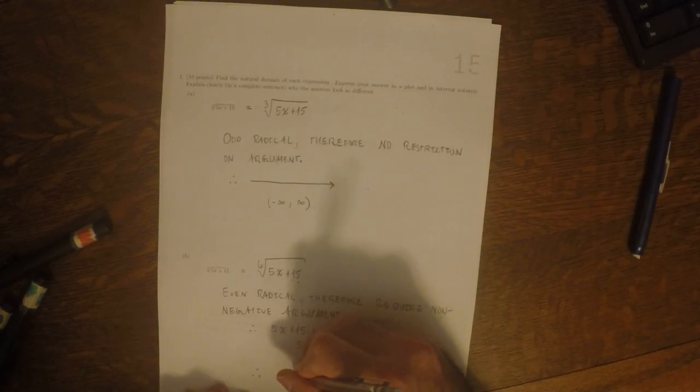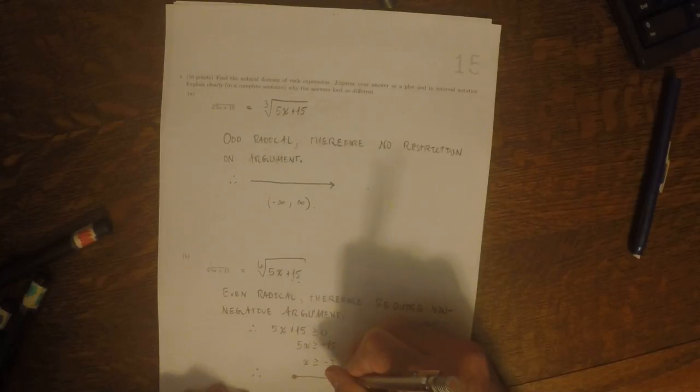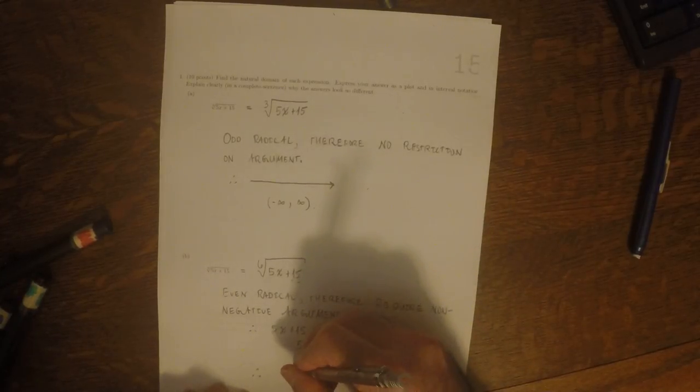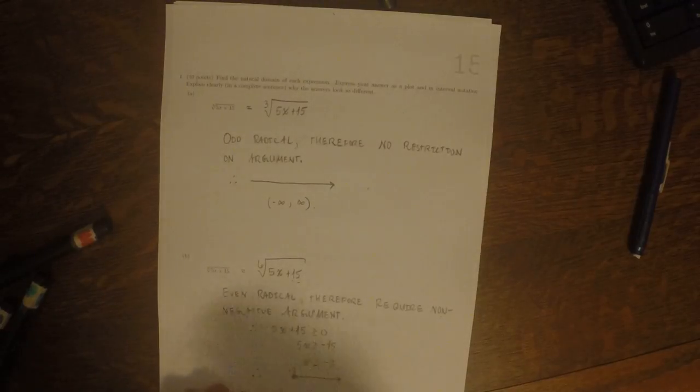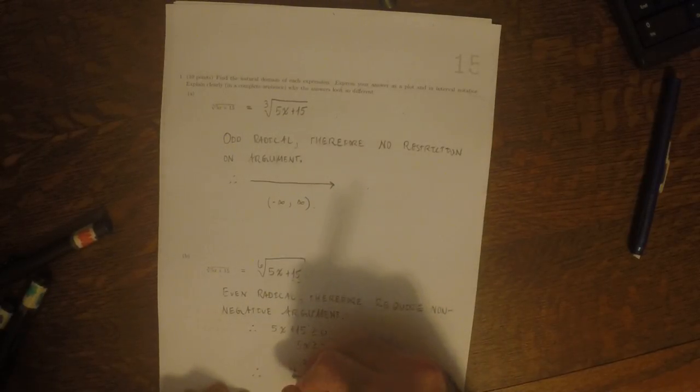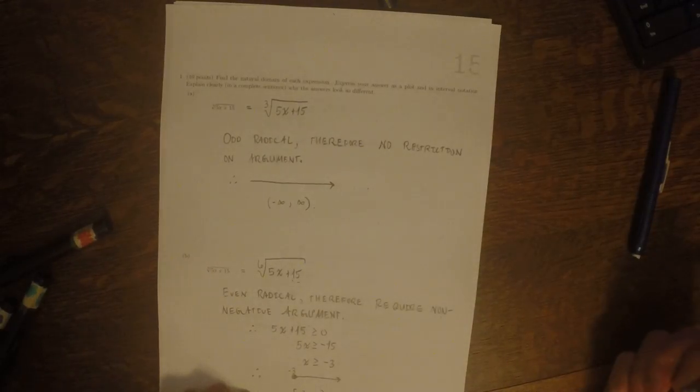Written in interval notation, that's as a plot. That's negative 3 onward. And in interval notation, that's negative 3 to infinity.